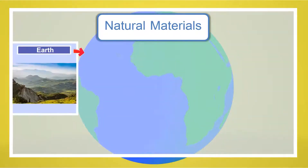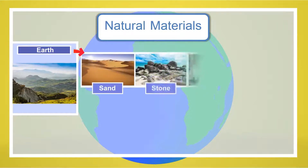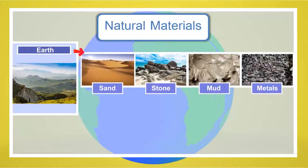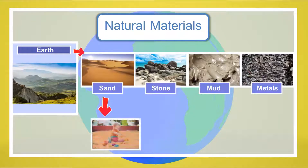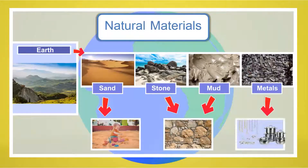The earth provides us with many natural materials such as sand, stone, mud, and metals. We use these natural materials that the earth provides us in order to make many different things. We use sand in gardens and playgrounds. We use stone and mud for buildings, and metals for jewelry and household items.